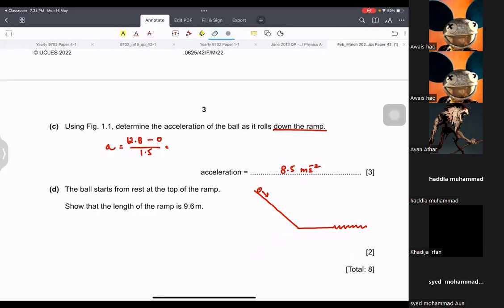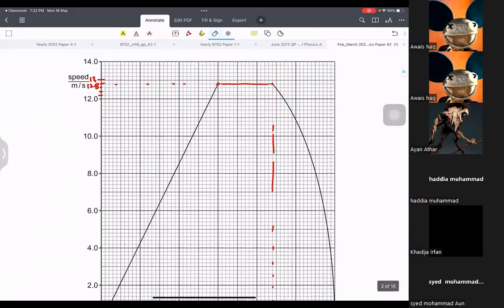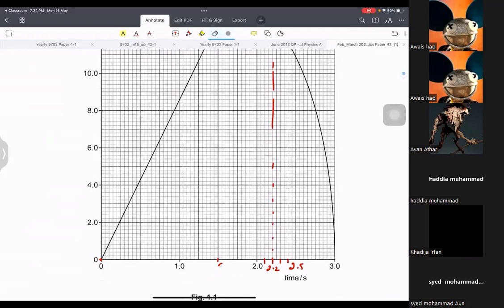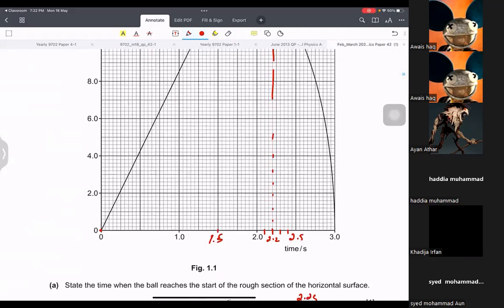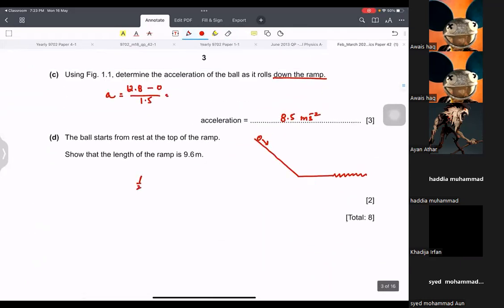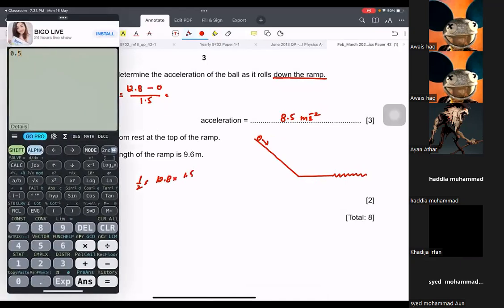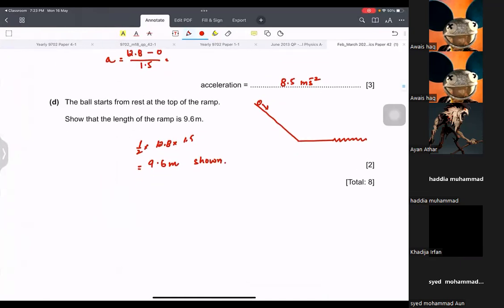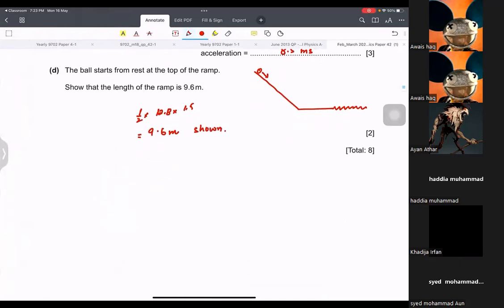The ball starts from rest at the top of the ramp. Show that the length of ramp is this. We know that area under the graph is the length. So it's 1.5 and that's 12.8. That's a triangle. So half times 12.8 times 1.5. That is 9.6 meters shown. Area under the graph of the ramp section. Pretty cool.